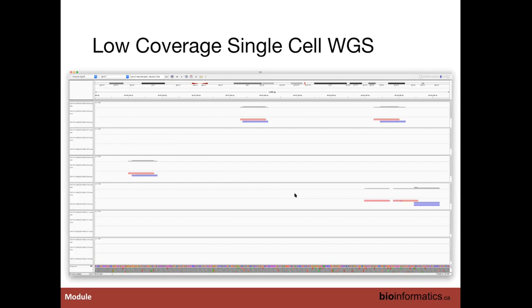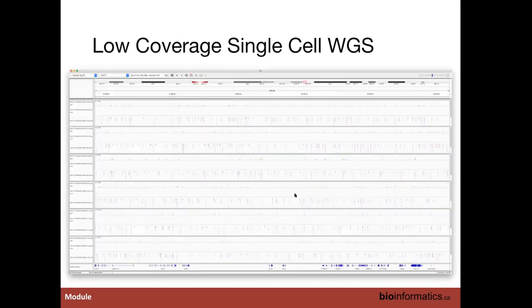Here's a first look at low coverage single cell whole genome sequencing — the data type I'll talk about most. This encompasses DLP, and 10x CNV would also have been a low coverage technique, while some techniques like DOP-PCR are a bit higher coverage. This is what you would first see when you open up one of the BAM files in IGV. As we zoom out, we can see that on average we get even coverage, and that coverage when we look at any two cells isn't biased to particular regions — which is what DLP and others have optimized for.